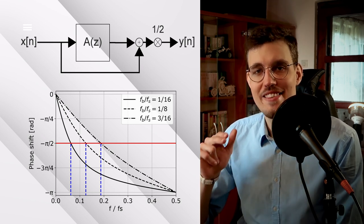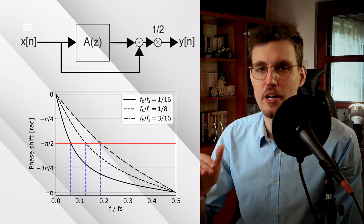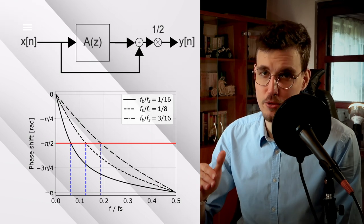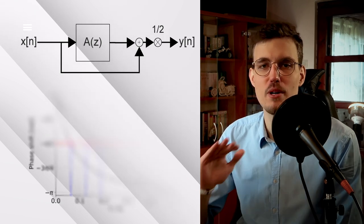Okay, we know that at the output of this structure, the zero hertz component will be doubled in amplitude and the Nyquist frequency component will vanish. What will happen between these two frequencies?